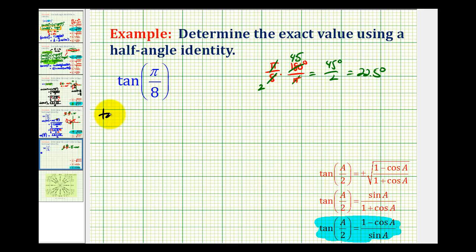So let's rewrite this as tangent 22.5 degrees. Then we'll double the angle to identify the value of A used here, as well as on the right side, which we had before we divided. This is the same as tangent 45 degrees divided by 2. So A equals 45 degrees.